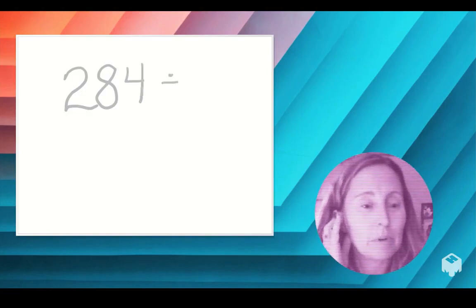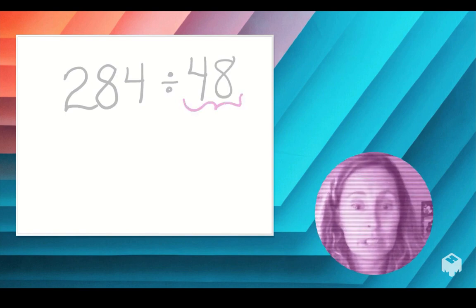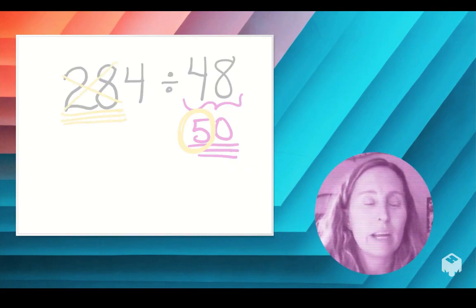So let's look at one more example. What if we had 284 and we are dividing that by 48? First, I'm going to take 48 and I'm going to change it to 50 because that's a lot easier to do in my head. I've rounded it, right, to the top place.